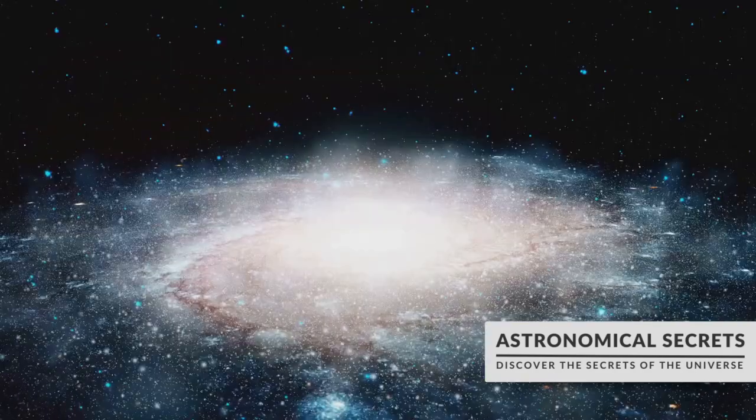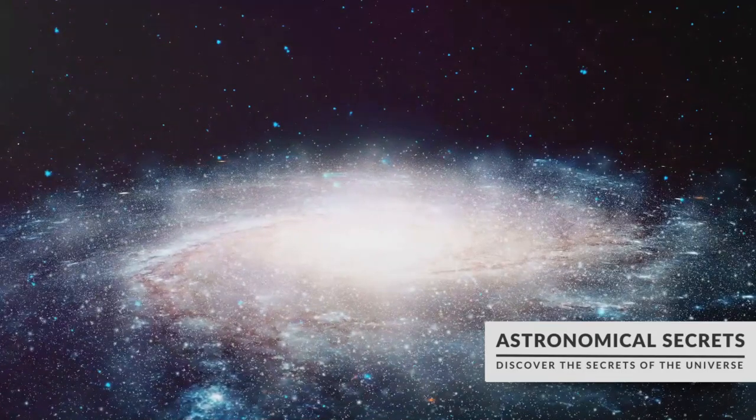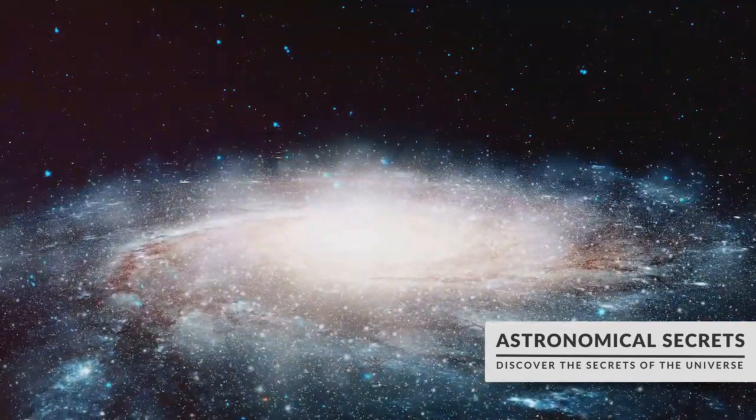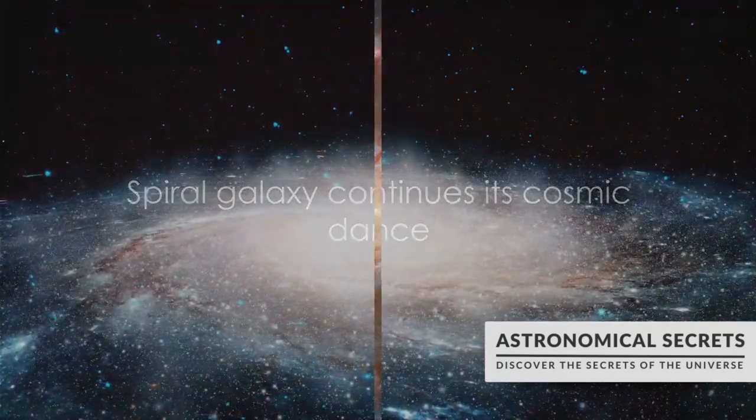Stars will be born and die, planets will form and be destroyed, and the galaxy itself will continue to spin and dance in the cosmic ballet. And from this cosmic birth, a galaxy begins its spiral dance.